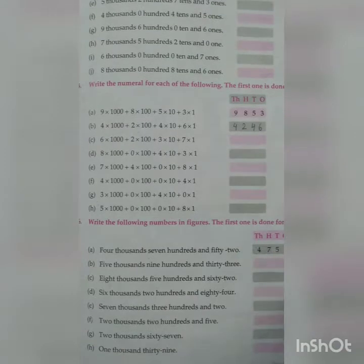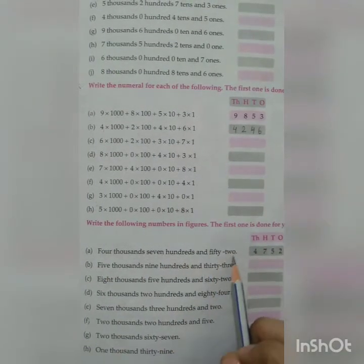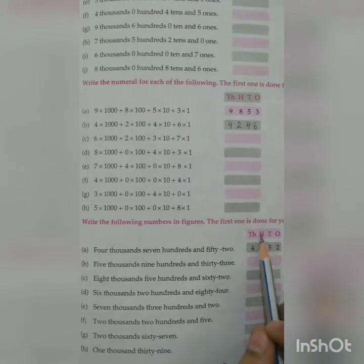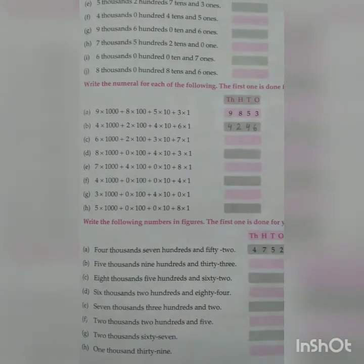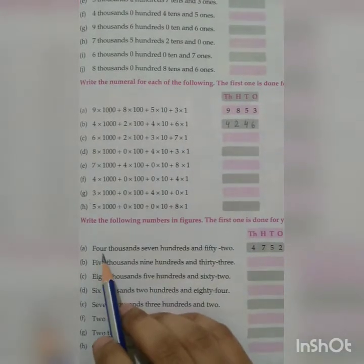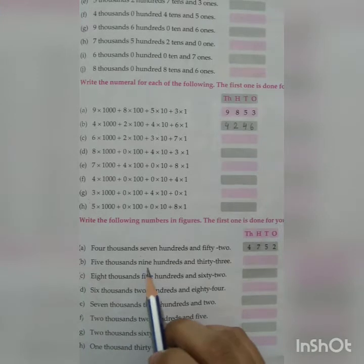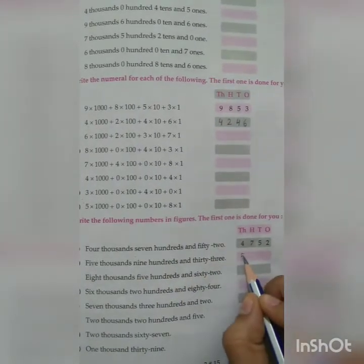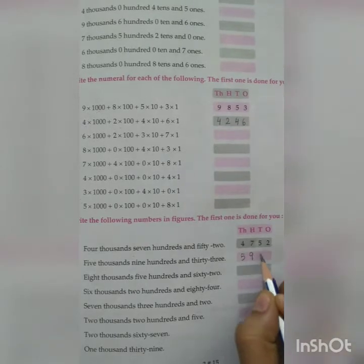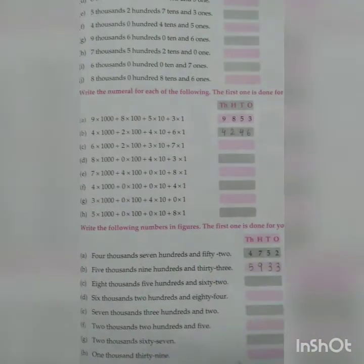Now next, read the number name and write it in figures. 4,752. So 4,752. Now it's not written 5 tens and 2 ones. It's written the number name. Like we read the number. 5,933. Like this, you will finish up this work.